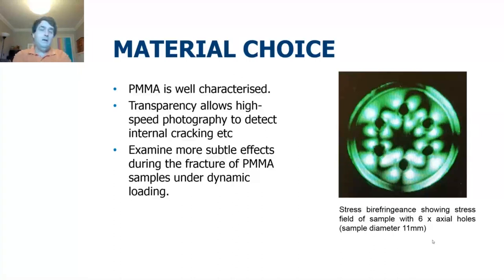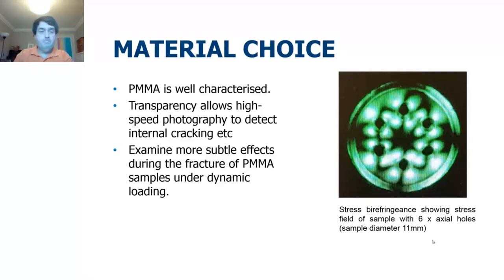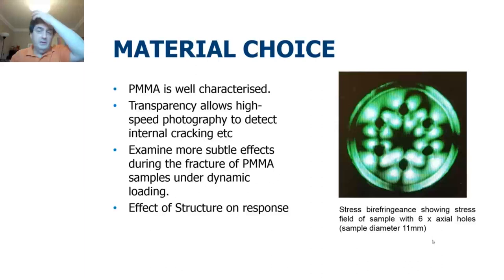We went for Perspex because it's well characterized, it's transparent so we can take photographs of cracks growing, and by changing the temperature we can examine more subtle effects of damage under dynamic loading. You can use stress birefringence or cross-polaroids to show the stress field — in this case it's a polymer disc with six axial holes around the center. You can anneal the Perspex sample at around 100°C to remove the residual stress.